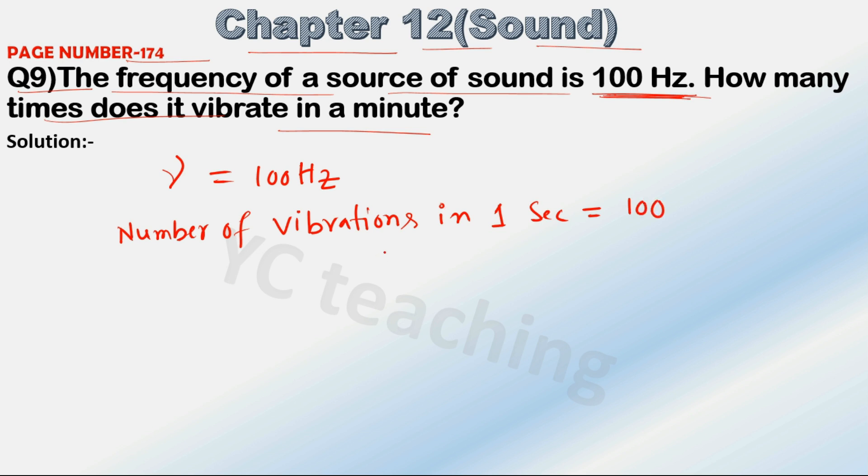Number of vibrations in 60 seconds is equal to 60 into 100, that is 6000.